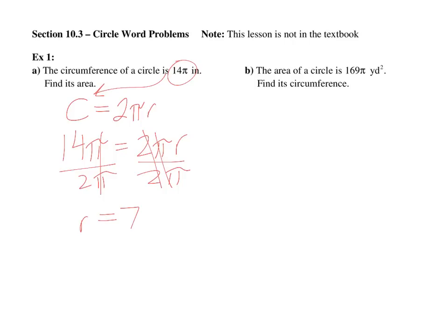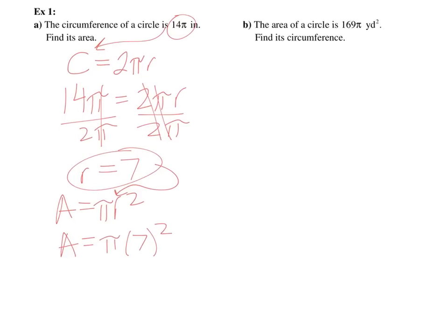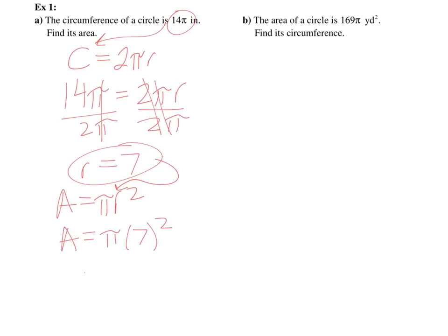Now the area formula is pi r squared, so now I plug r in. I get pi times 7 squared. So the area is equal to 49 pi, and it's going to be inches squared. Done.